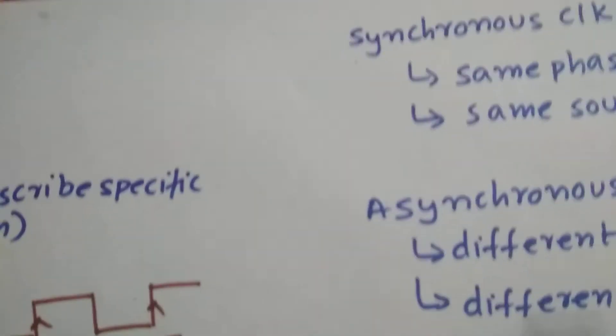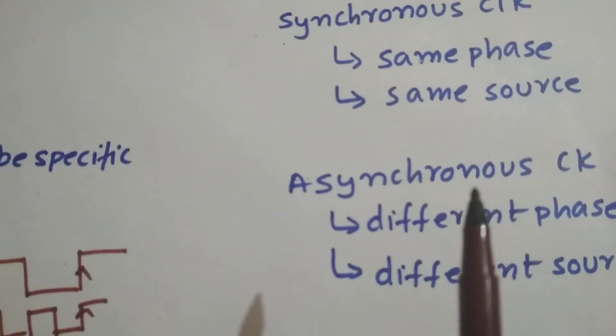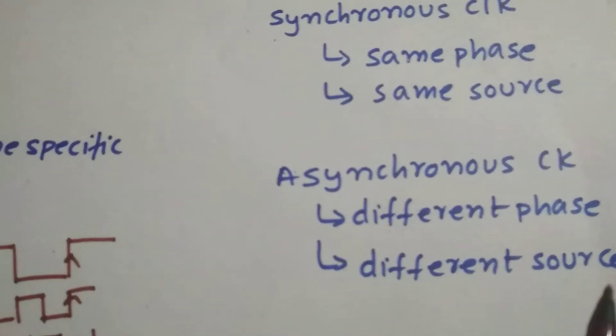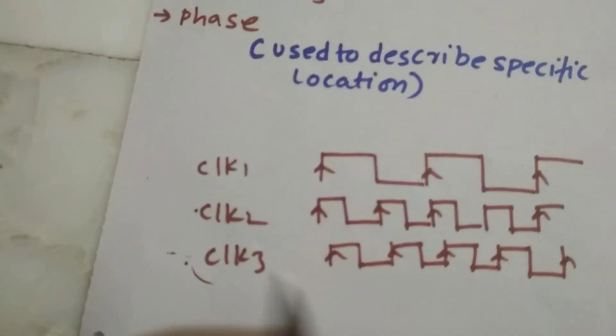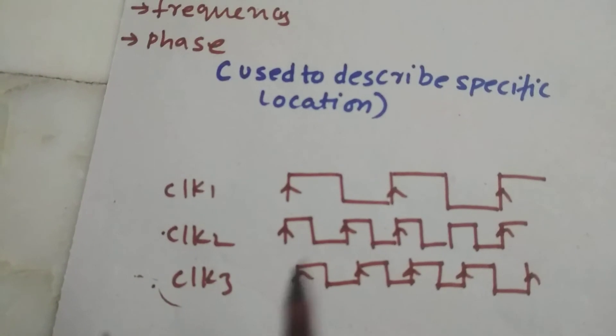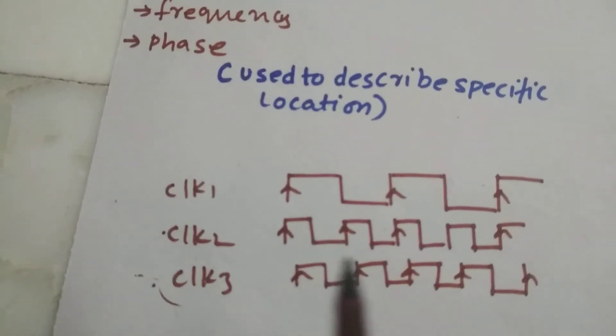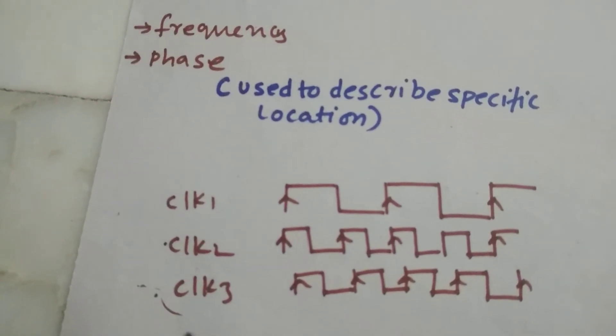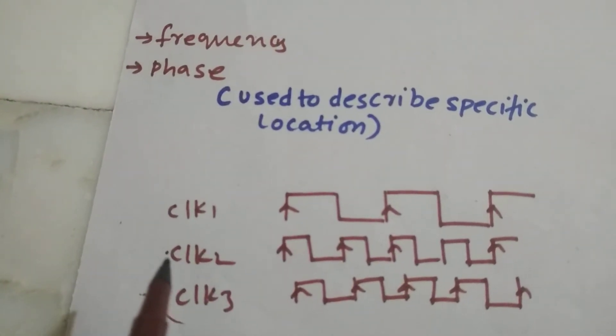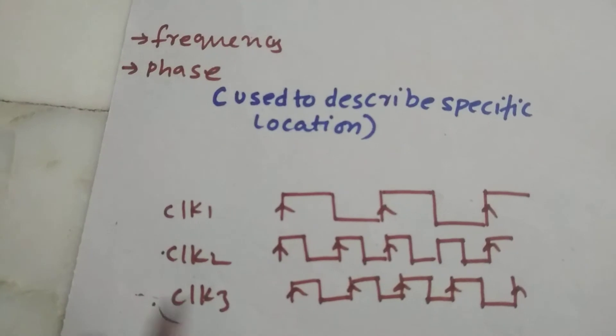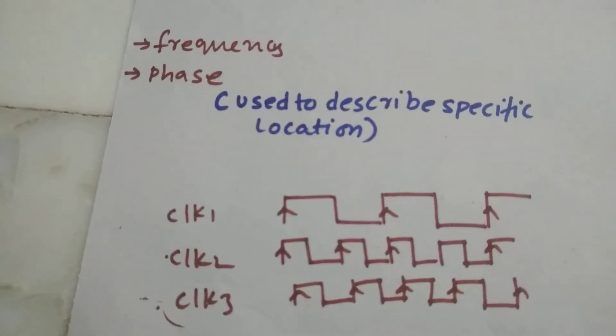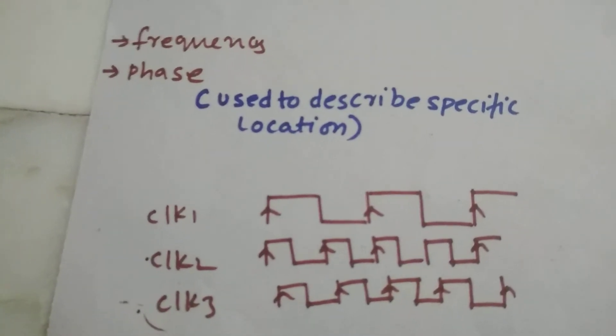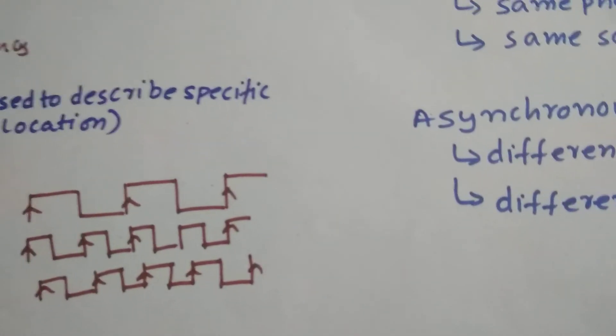Asynchronous clocks means they have two different phases - different phases and different source. Let's consider this example where clock three is having a different phase from clock two and clock one, and it's from a different clock domain. Let's assume that clock one and clock two are from clock generator A, and clock three is from clock generator B. So the phase is different here, and the clock source is different here.